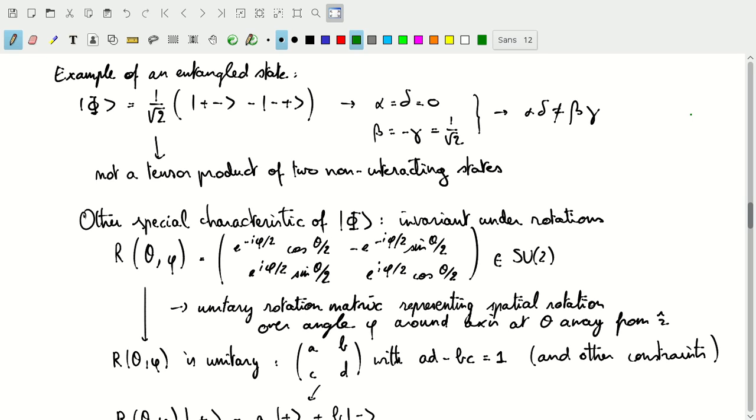So remember we're working in a Hilbert space that's the tensor product of the Hilbert space in two dimensions and another Hilbert space in two dimensions. So in total we'll have four dimensions and we indicate our basis vectors as |++>, |+->, |-+>, and |-->.